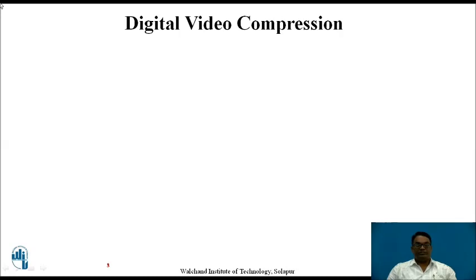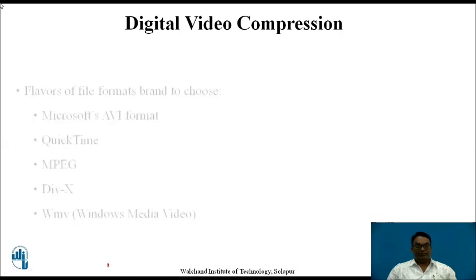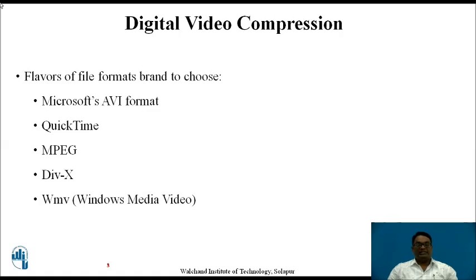First we are going to see what is meant by digital compression. There are different formats in the electronic system and in the computer system. Microsoft AVI is the first format which is generally used for videos. QuickTime is another format used for digital videos. MPEG, DIVX, and .wmv are the different video formats generally used for compression.